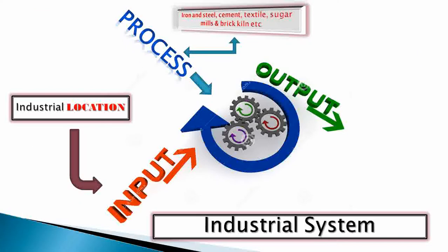Now we will look at the industrial system. It works as three stages: input, process, and output. Output is the easiest to understand. For example, if there is a cement industry, its output is cement. If there is a sugar mill, the output is sugar. The brick industry manufactures bricks and the iron steel industry manufactures steel. Output questions are sometimes asked for one or two marks to identify the output of different industries in Pakistan.